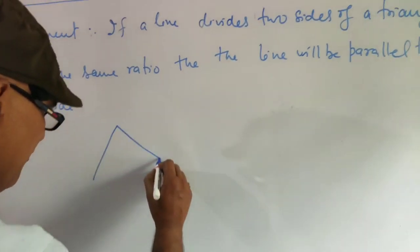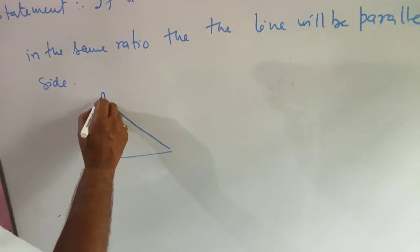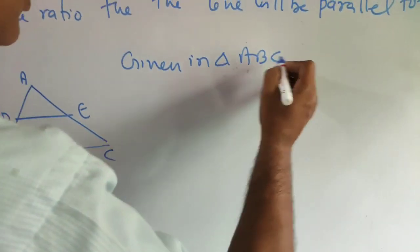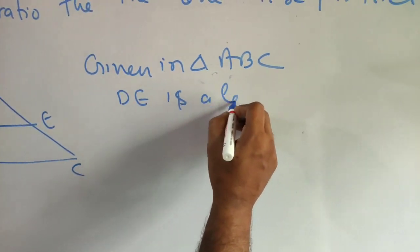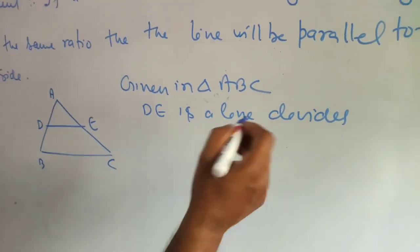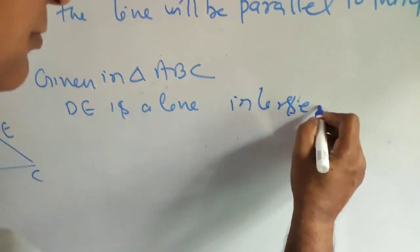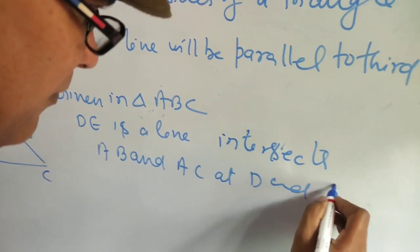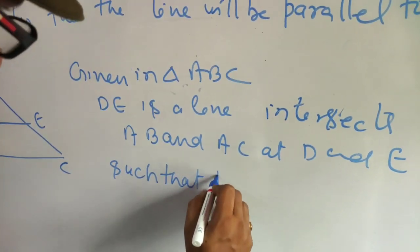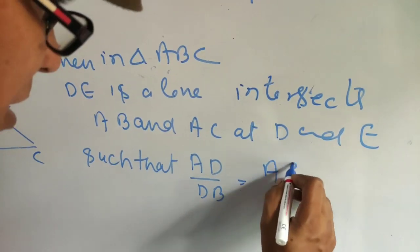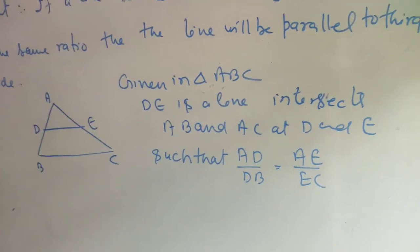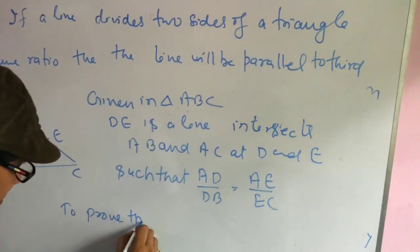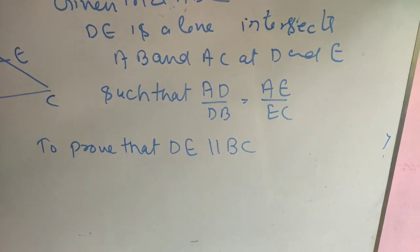This is the converse of the Basic Proportionality Theorem. In triangle ABC, D and E are points on two sides such that AD/DB is equal to AE/EC. This is given. In the original BPT we proved this ratio; here it is given and we have to prove that DE is parallel to BC.